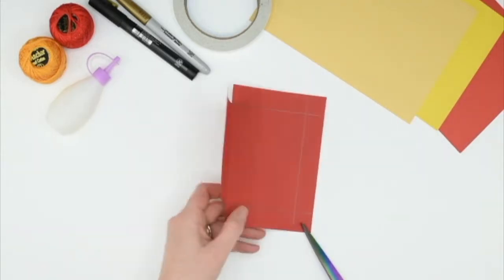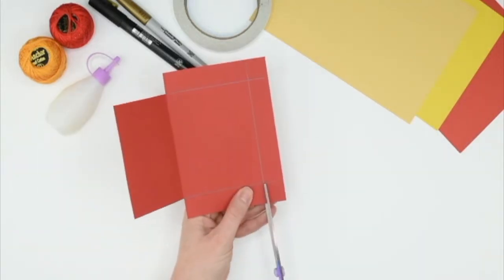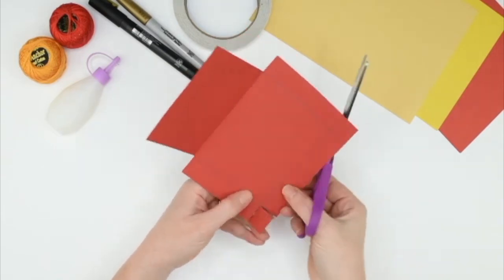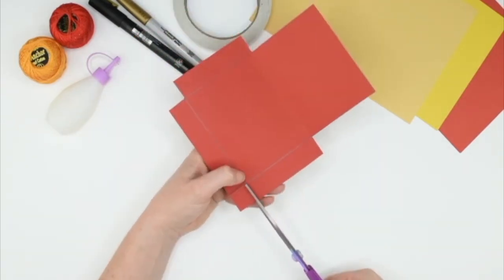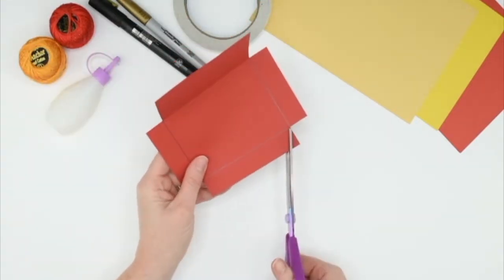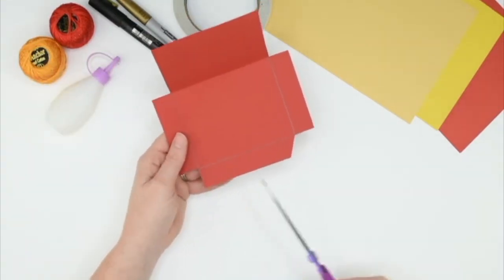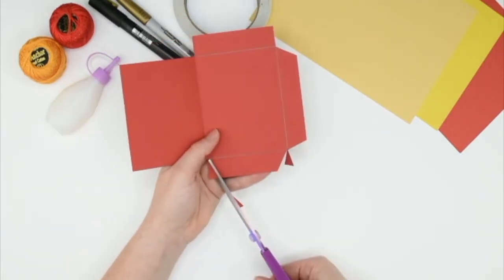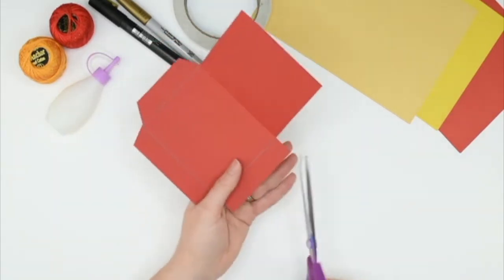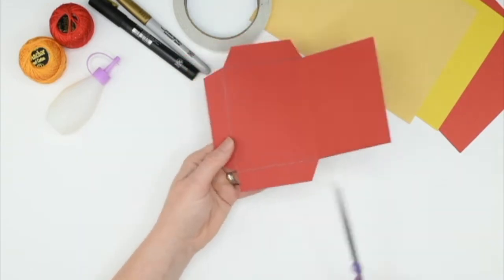Once you've done that, on the right hand side we're going to cut away the small squares that are created by the overlapping lines. Then to make our next step easier, we're going to go back to our sections here and just cut a little bit of triangle off each side. This will make folding them in a little bit easier.